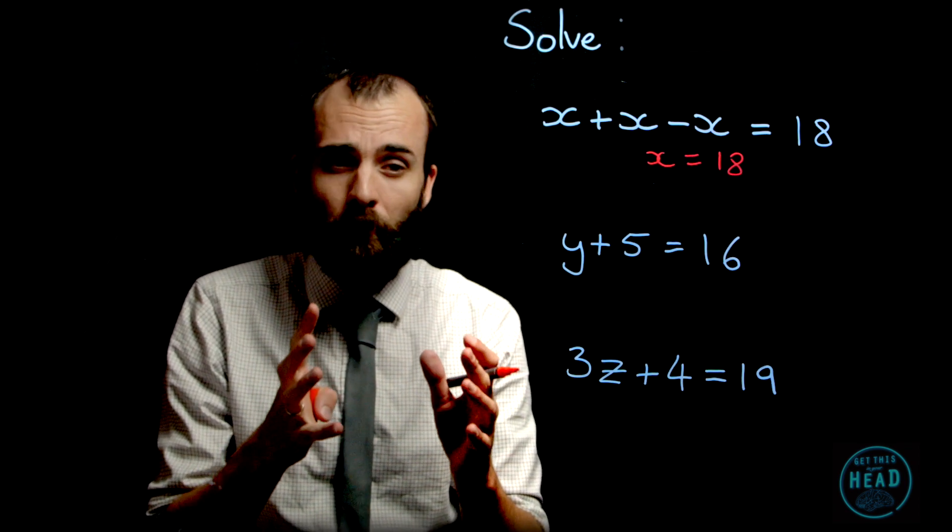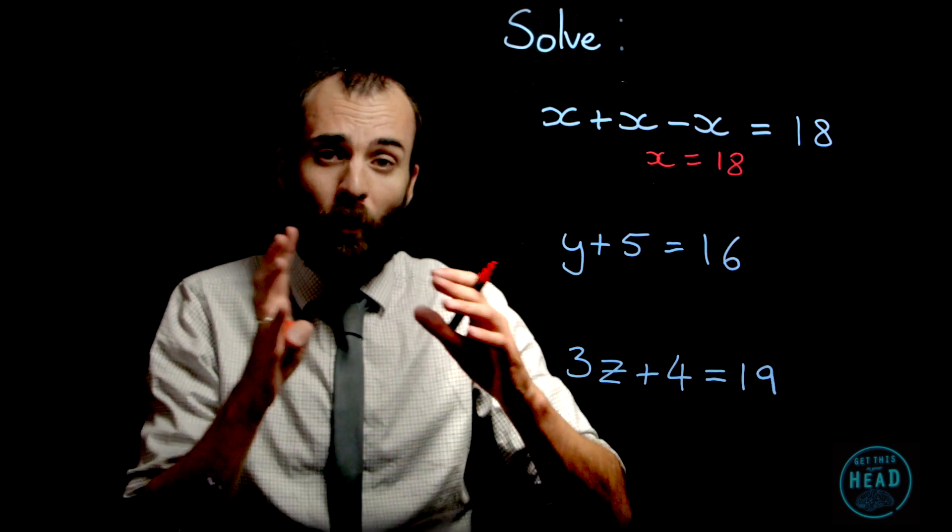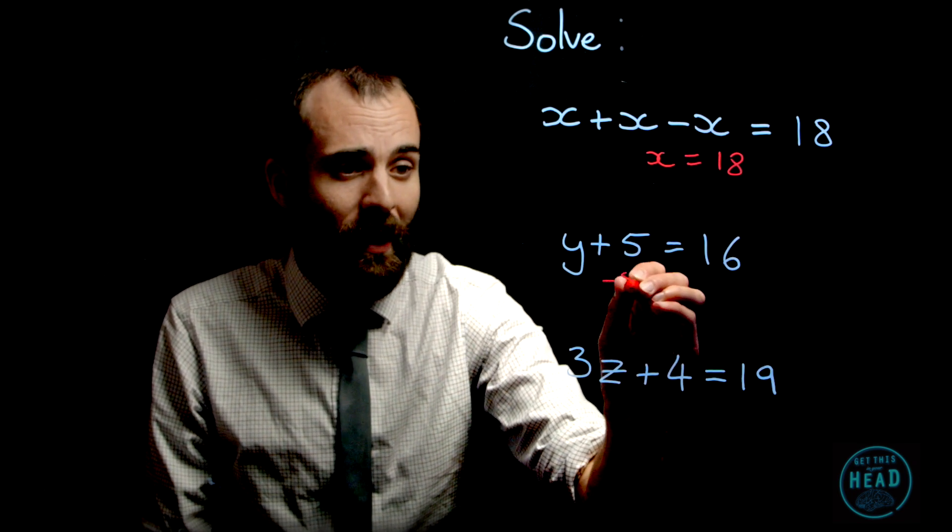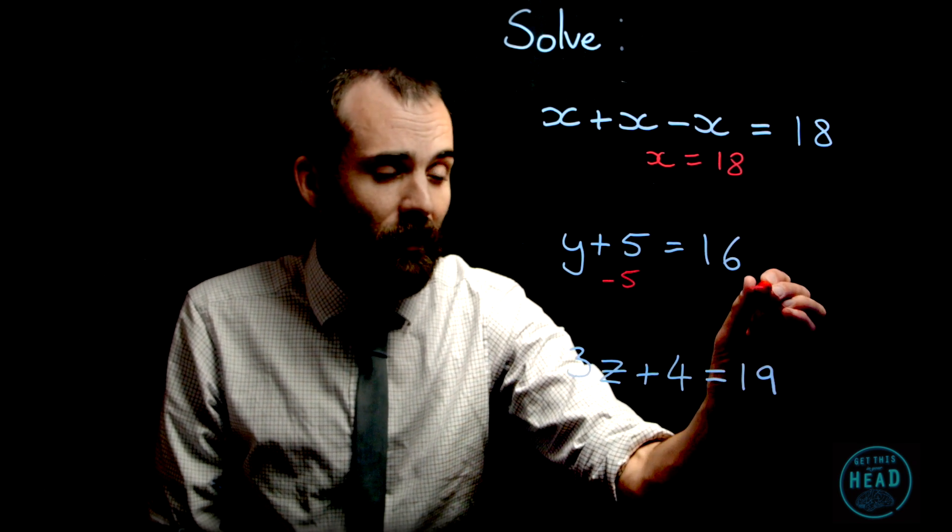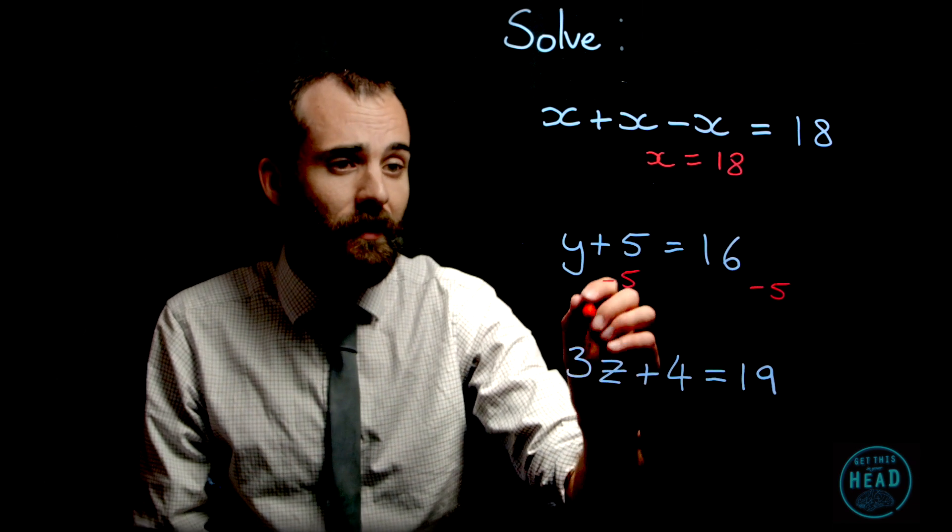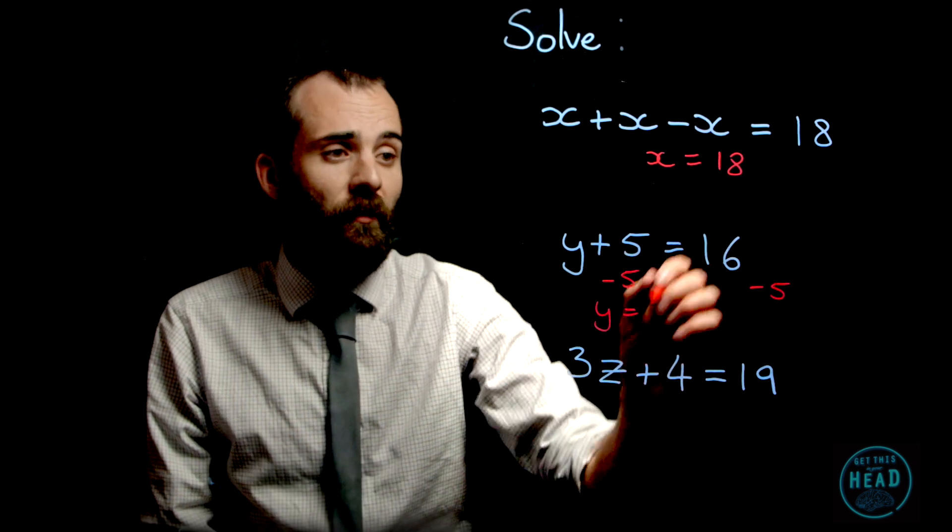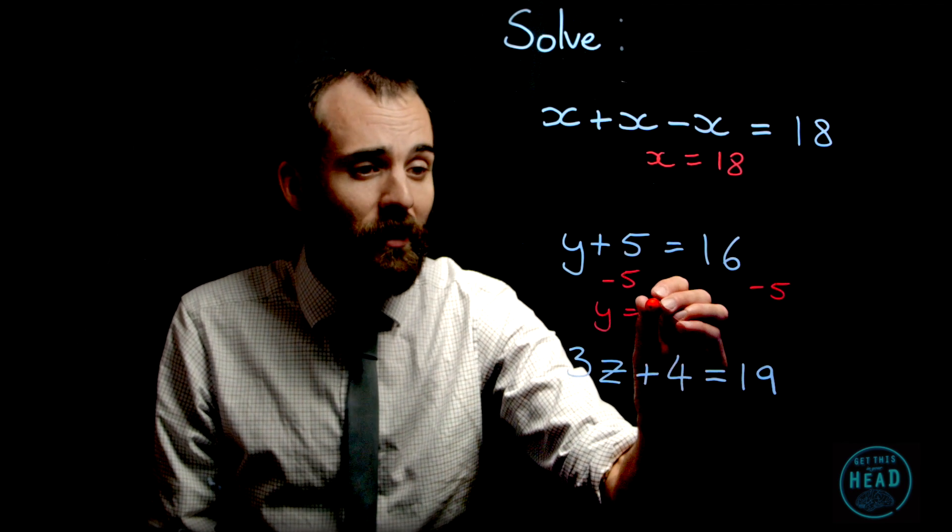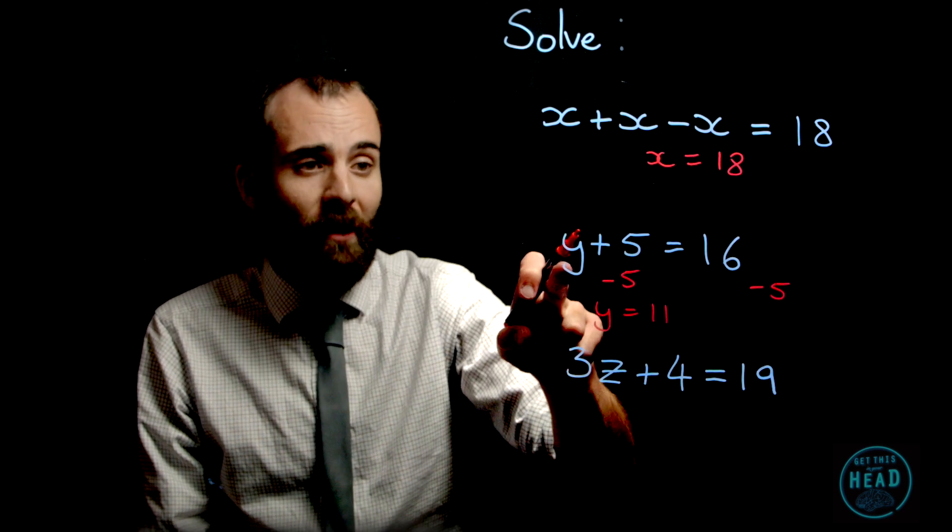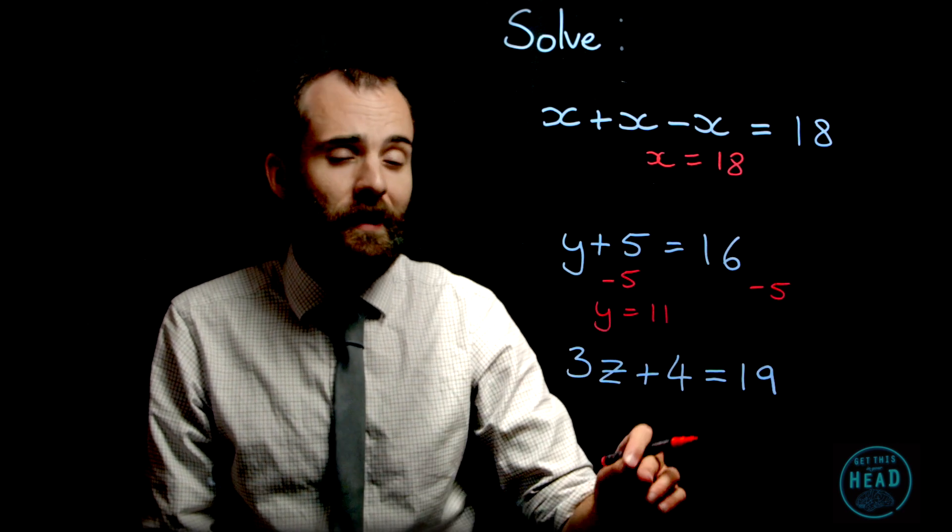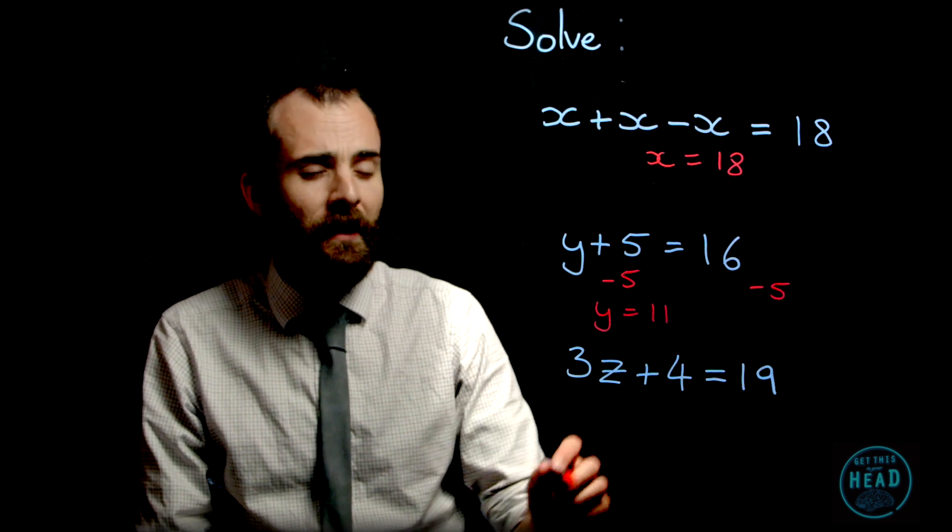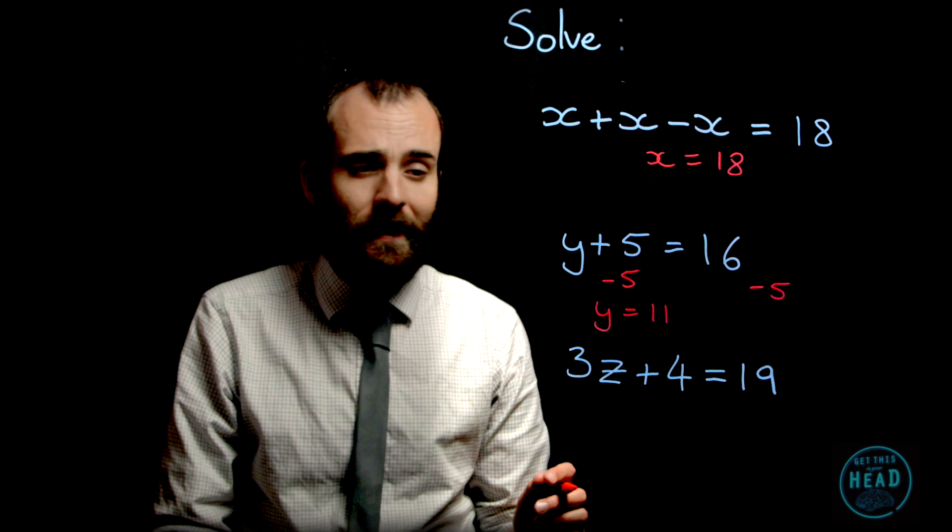The second one: y plus 5 equals 16. Well, if I know that y, my missing number, my variable, with 5 extra added to it is 16, I can just take away 5 from it. I'll do the same to both sides because I've got to keep my equation balanced, which will leave me with y equals 11. Let's go back and check that again: 11 plus 5 equals 16. That works, spot on. This final one then: 3z plus 4 equals 19.